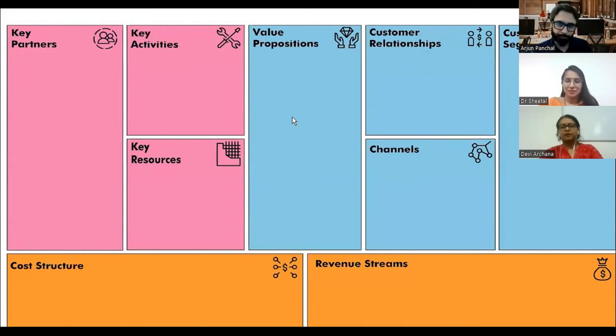Which block? If you divide customer segments and relationships... revenue stream, customer relation. Yes, Sanchin, more. Just one block.